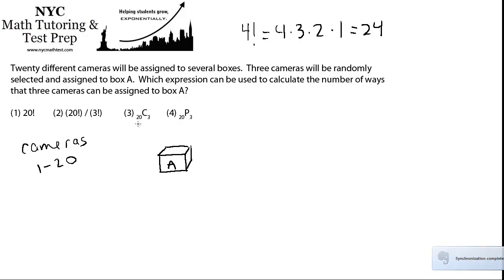The combination is for when you're choosing three objects from a group of twenty, where order doesn't matter. So, combination, order doesn't matter. What do I mean by that? Order doesn't matter.